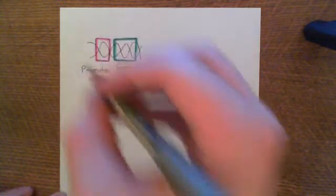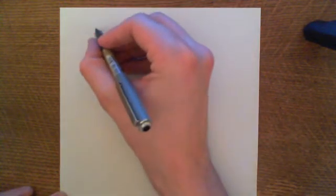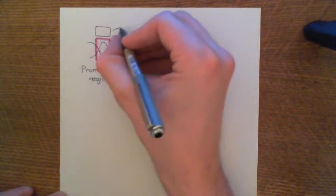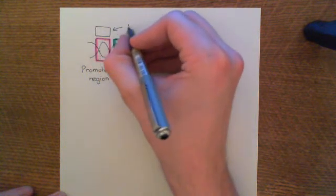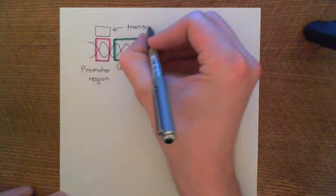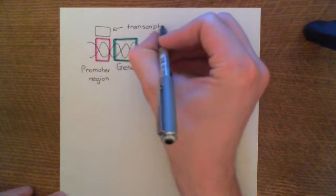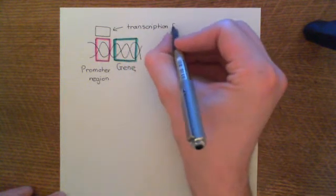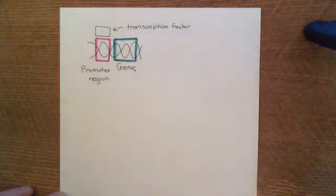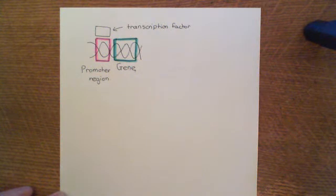Now, a transcription factor is any molecule which binds to the promoter region and alters the affinity of the promoter region for the RNA polymerase. So you can have transcription factors which enhance the expression of the downstream gene by increasing the affinity of the promoter region for the RNA polymerase enzyme, and you can also have transcription factors which repress the expression of the gene by reducing the affinity of the RNA polymerase for binding to that promoter region.